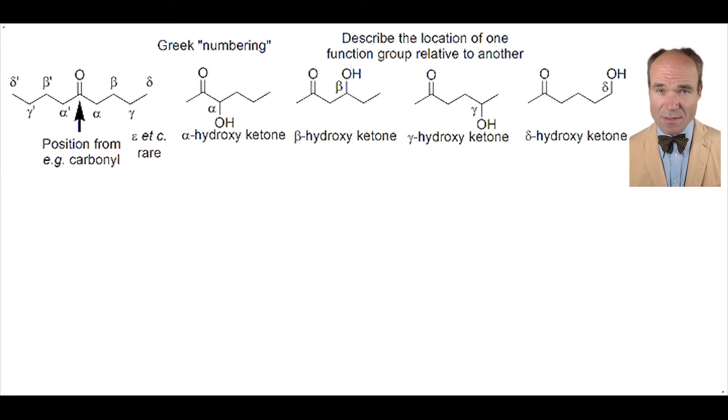This strategy of describing molecules is commonly applied to a number of functional groups. Another frequently used is indicating the location of an alkene to a ketone. Here we see that the alkene is located at carbons alpha and beta relative to the ketone.